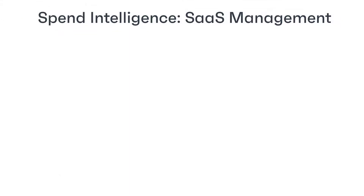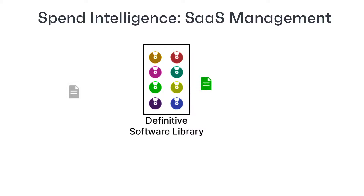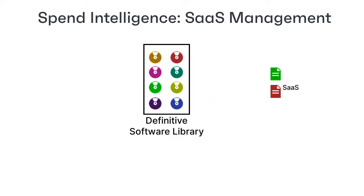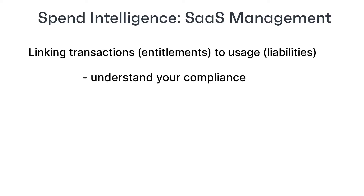Perhaps the most valuable insights, however, come when you also import license information into the system. At this point the system identifies which licensed transactions are subscriptions for discovered SaaS applications and links them to the appropriate SaaS application identified from the SaaS connector. You can tweak these links at any time. This linking of imported transactions to discovered SaaS usage helps you to understand your compliance — do your subscriptions match your usage?